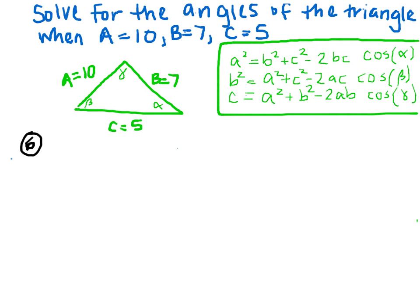Okay, this is problem number six. It says solve for the angles of the triangle with the given side lengths of A equals 10, B equals 7, and C equals 5.